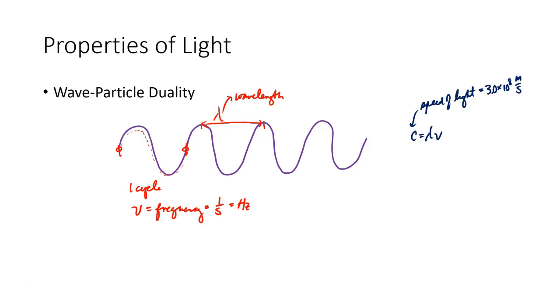Light has this wave nature, but sometimes we think of it as a particle or a little packet of energy. When we think of light as a particle or photon, we use this equation. The energy of that photon equals h times nu. So again, nu is frequency, h is Planck's constant.